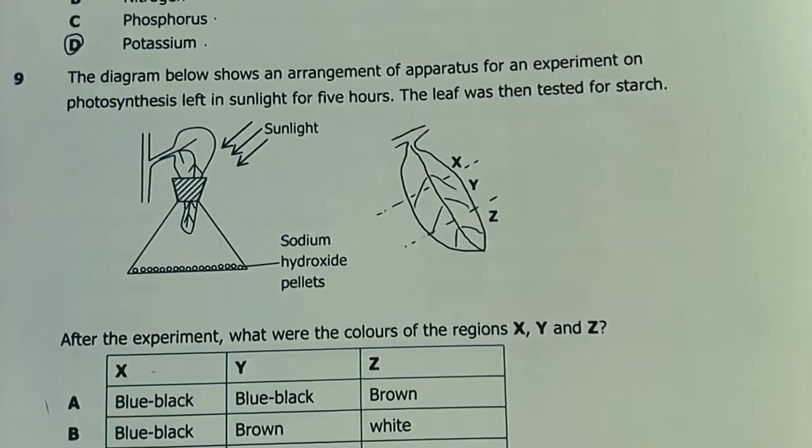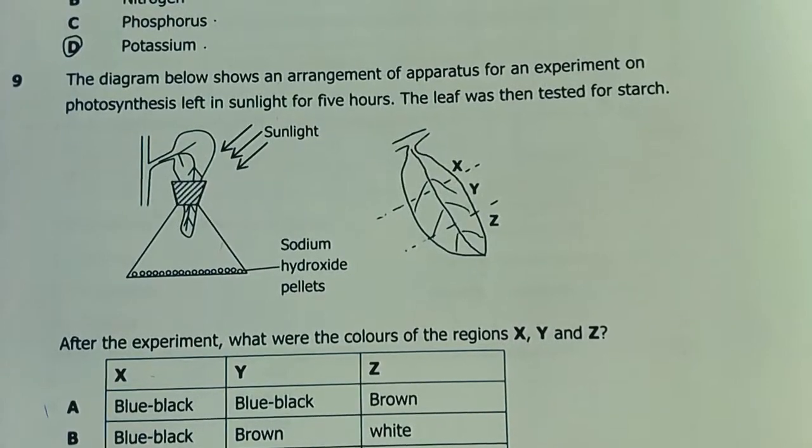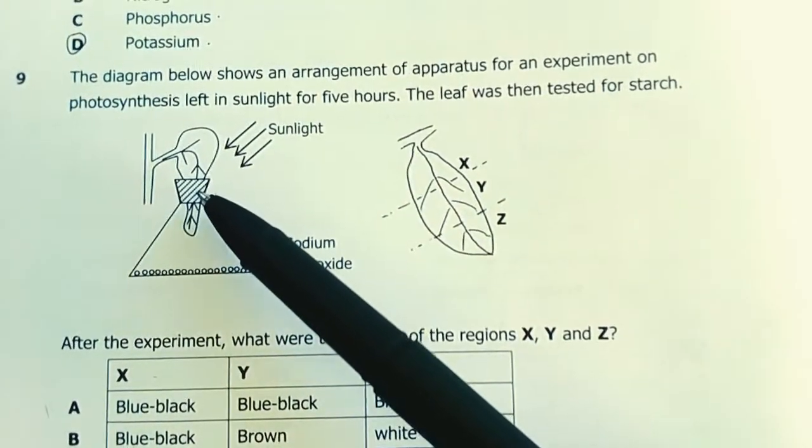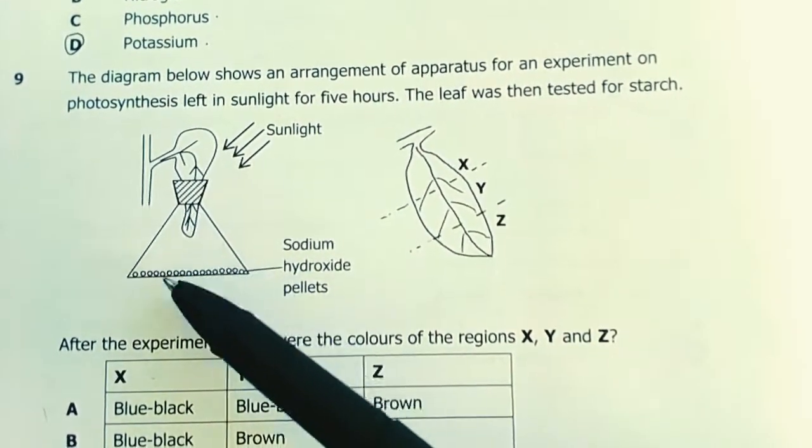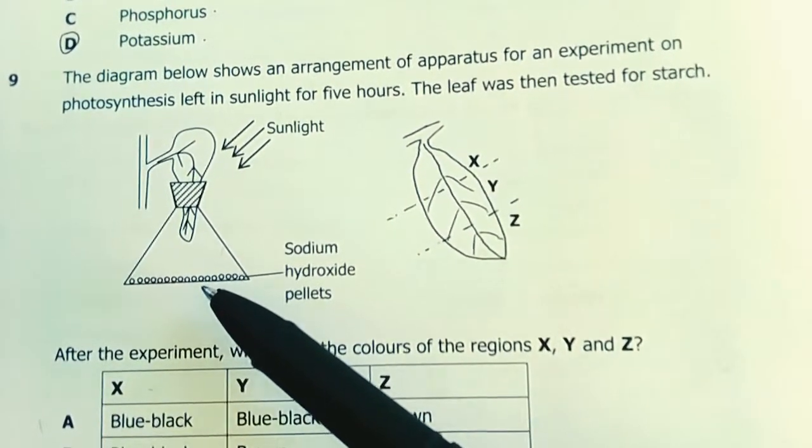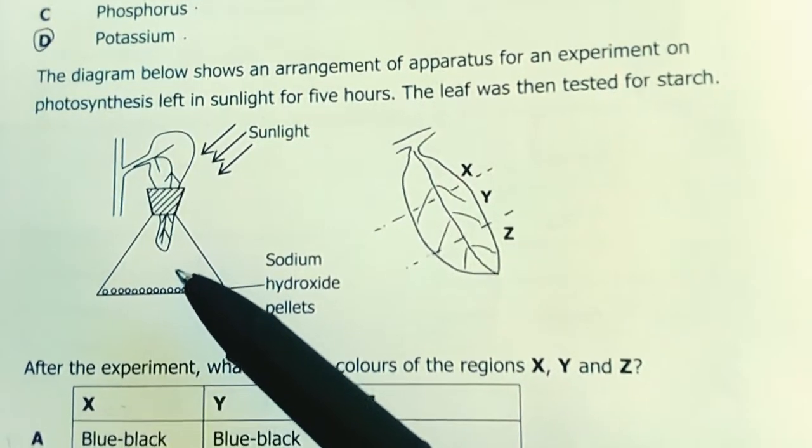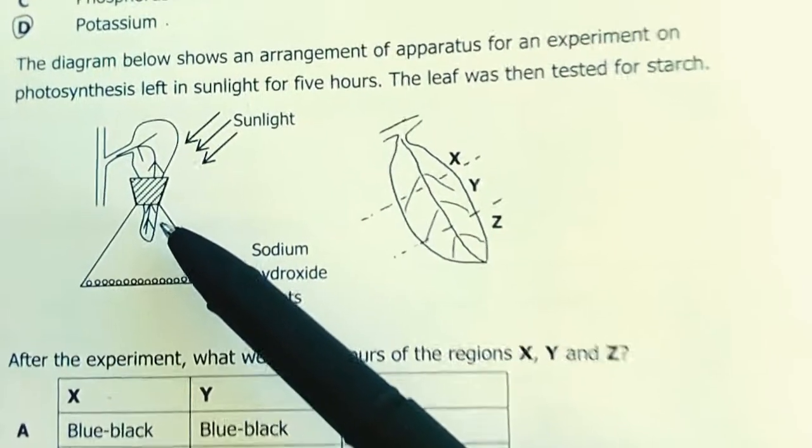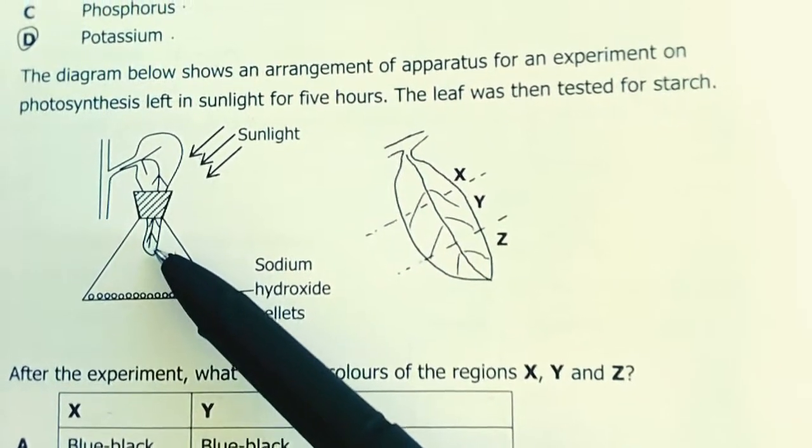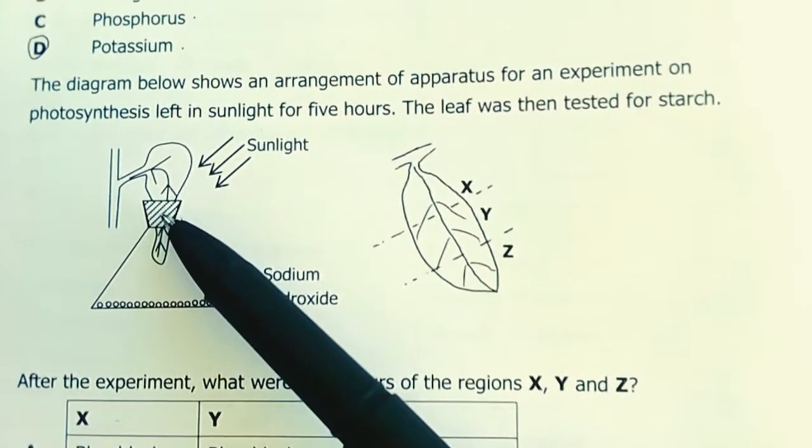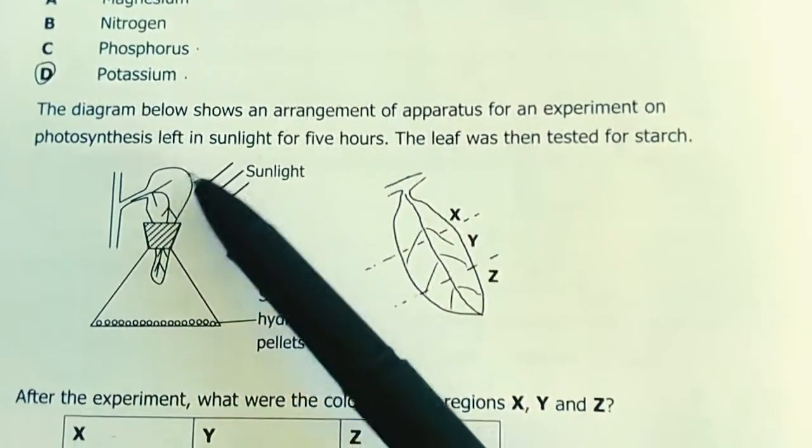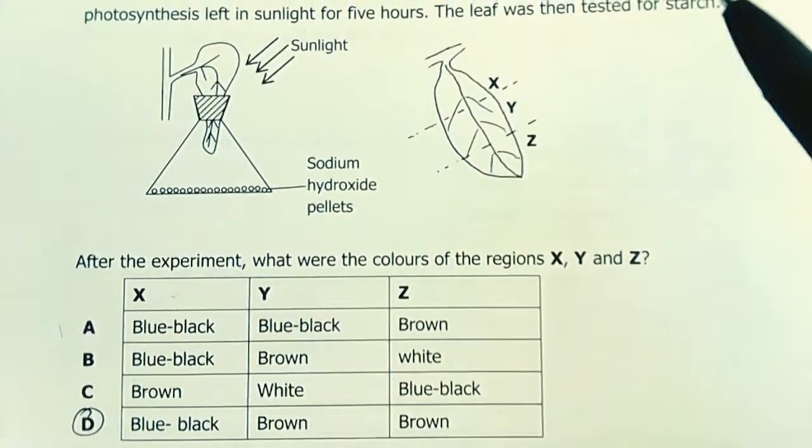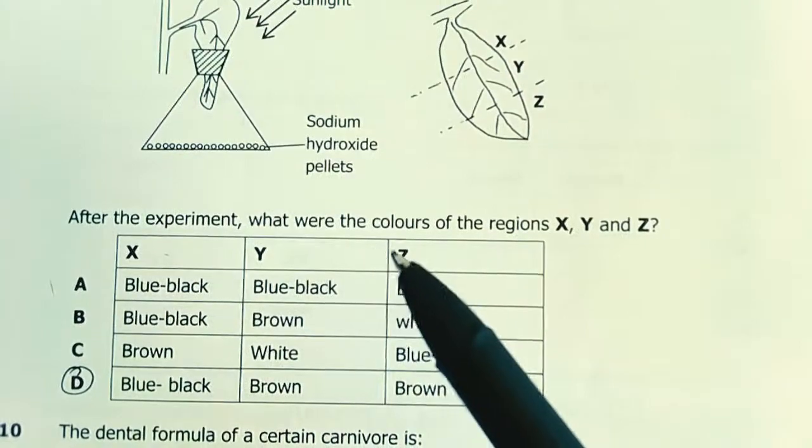Number 9. The diagram shows an arrangement of apparatus for an experiment on photosynthesis left in sunlight for 5 hours. The leaf was then tested for starch. Look at the arrangement: sodium hydroxide pellets, sunlight, and this part where the leaf is not exposed to light. The leaf is covered in a conical flask which has sodium hydroxide pellets. Sodium hydroxide absorbs carbon dioxide. So here light reaches the leaf and water reaches the leaf, but carbon dioxide will be removed, up to 90-95%. So starch won't be formed, photosynthesis won't take place.